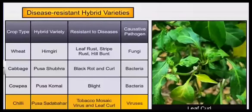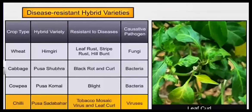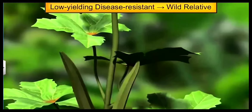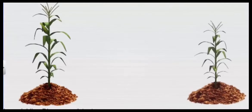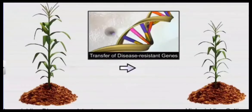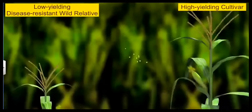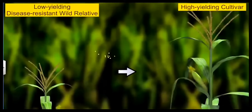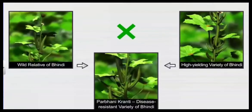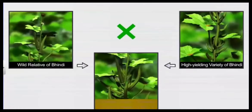In this conventional method, we generally take the low yielding variety which is disease resistant — that is the wild relative — and then that agronomic trait is passed on to our high yielding variety by the method of artificial hybridization followed by artificial selection, so that our high yielding cultivar also becomes disease resistant. A very good example is Parbhani Kranti.